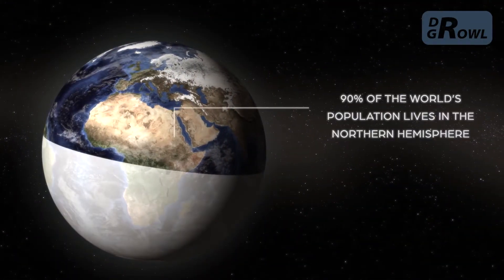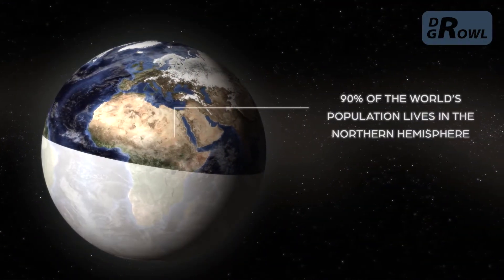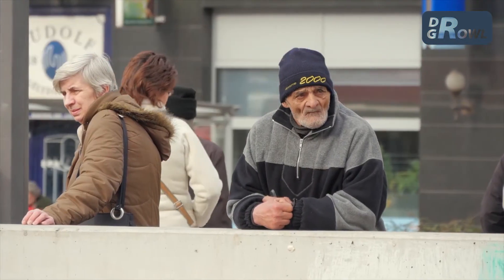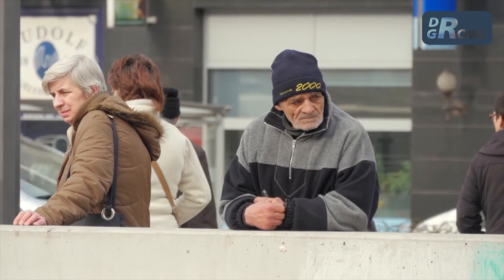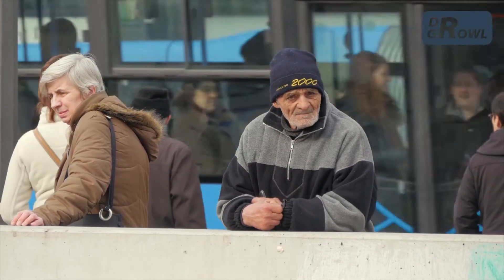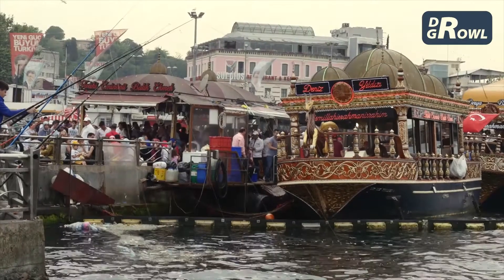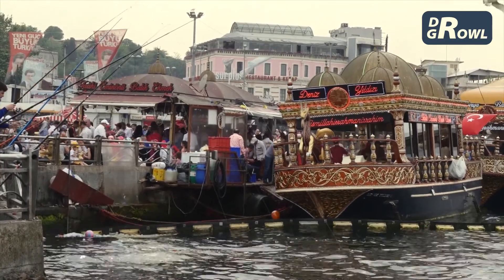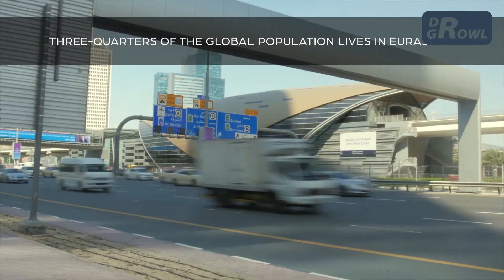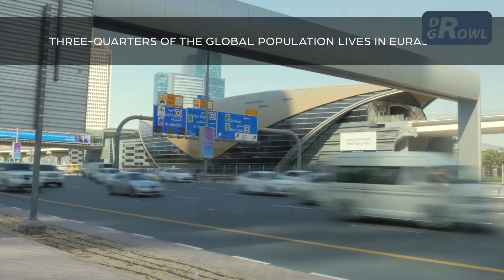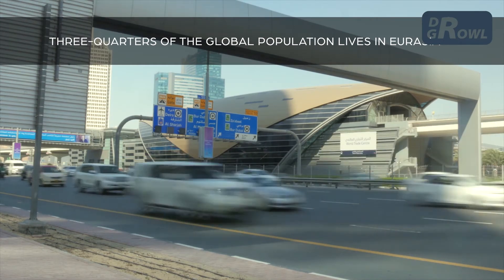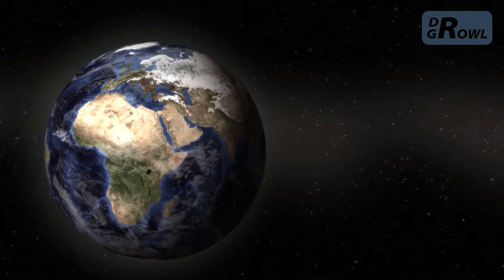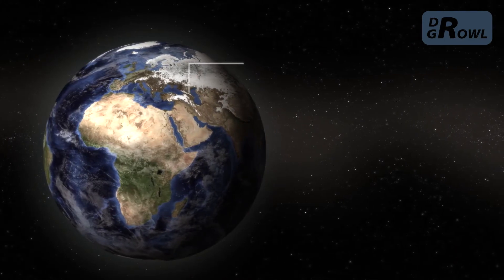90% of the global population lives in the northern hemisphere. There are both social and natural reasons for the uneven distribution of the world's population. Some regions in Asia have a population density of over 1,000 people per square kilometer. Almost three-quarters of the world's population live in Eurasia. Humans have inhabited both hemispheres and all the climate zones.